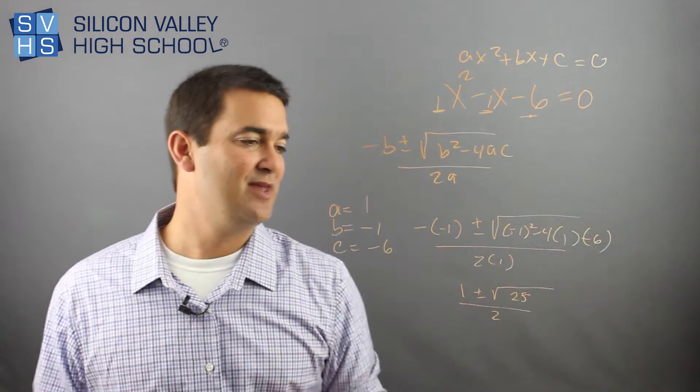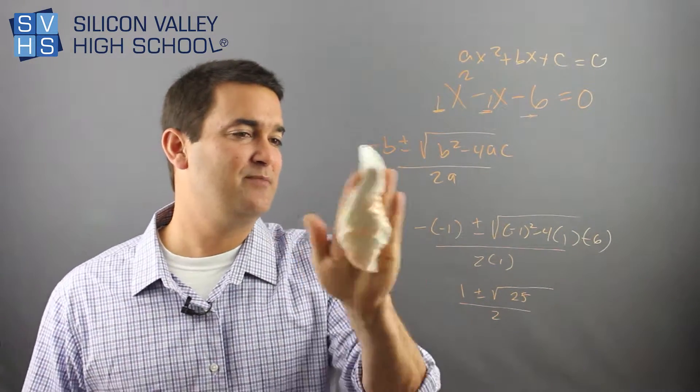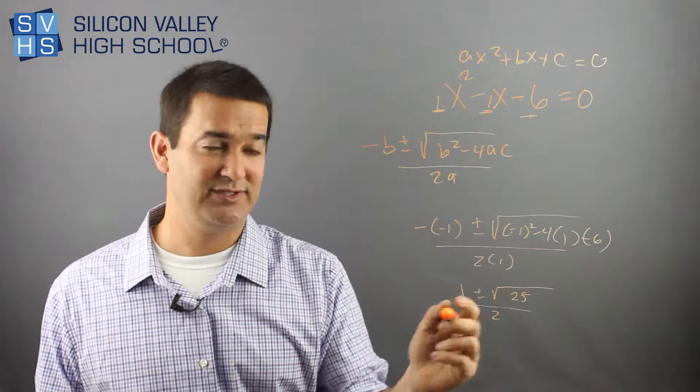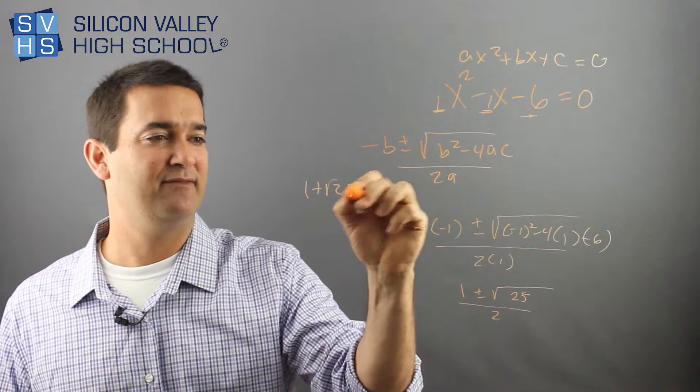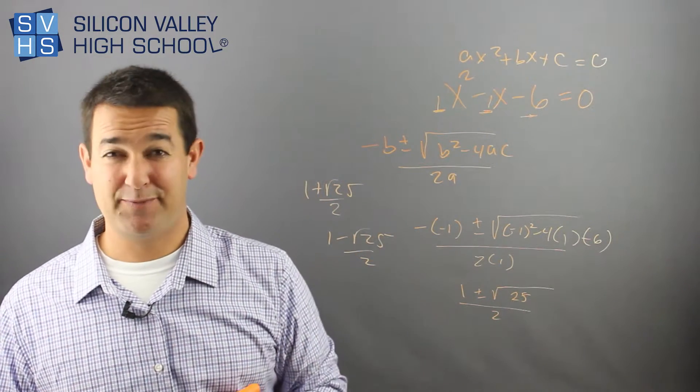And then I have over two. From here, you actually, this is weird. From here, because you have this plus or minus, you actually go into two different problems. You would start to, I would break these apart. So I'd have one plus root 25 over two, and then one minus root 25 over two. And I'd solve them separately.